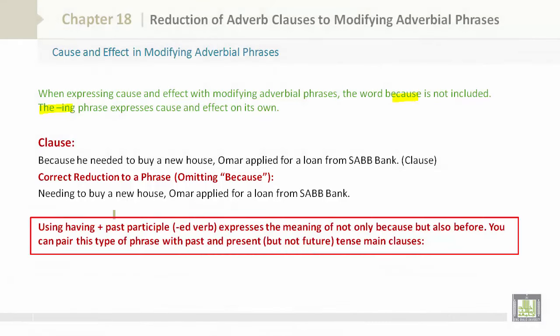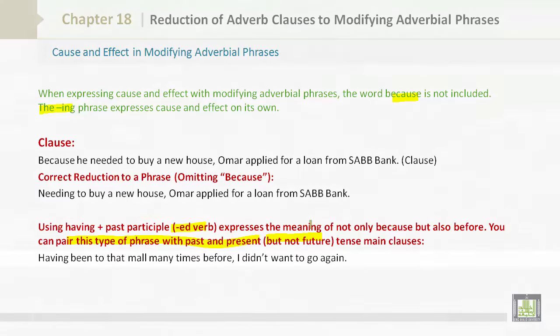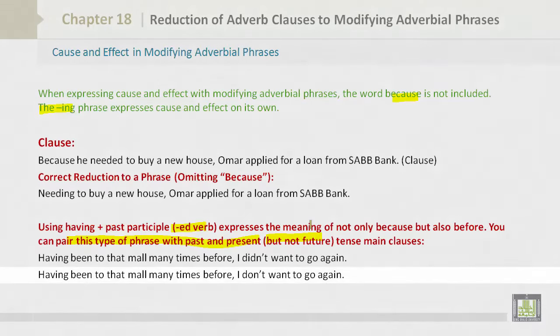Using having plus the past participle expresses the meaning of not only because, but also before. You can pair this type of phrase with past and present, but not future tense main clauses. For example: 'Having been to that mall many times before, I didn't want to go again.' Or: 'Having been to that mall many times before, I don't want to go again.'